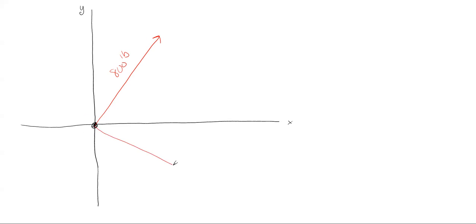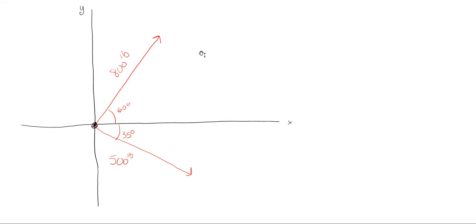So I have 500 pounds down here like this — it doesn't necessarily have to be to scale, but the better it is to scale, the better. So we have the 800, which is 60 degrees off of the x, and then the 500 is 35 degrees off of the x. That is my free body diagram.